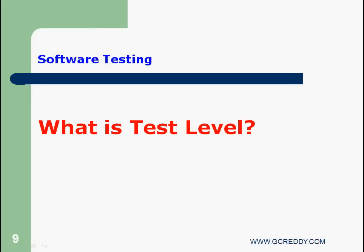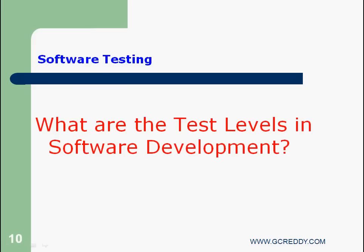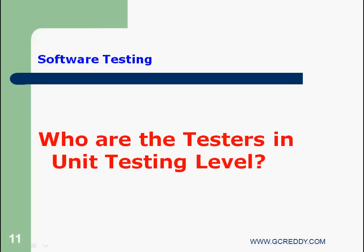What is Test Level? A group of test activities that are organized and managed together. What are the test levels in Software Development? Generally we have four levels of testing: Unit Testing, Integration Testing, System Testing, and Acceptance Testing. Who are the testers in Unit Testing Level? Developers or Programmers are testers in Unit Testing Level. They use White Box Test Design Techniques for Unit Testing.